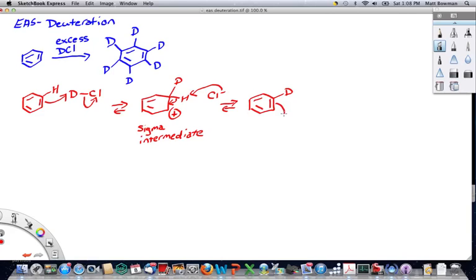What we're going to do is replace one of the other hydrogens with a deuterium by repeating the process. We could have chosen any of the hydrogens to replace.